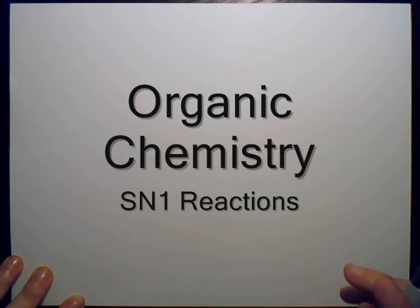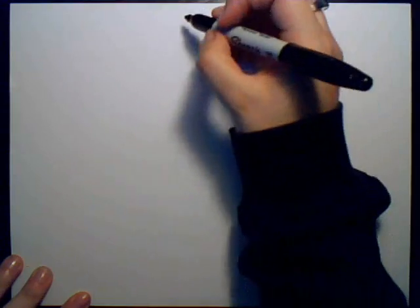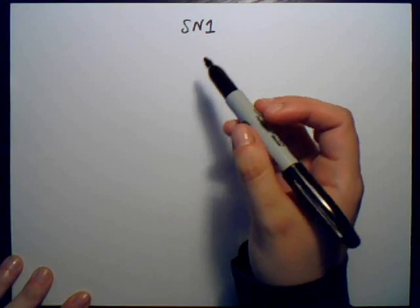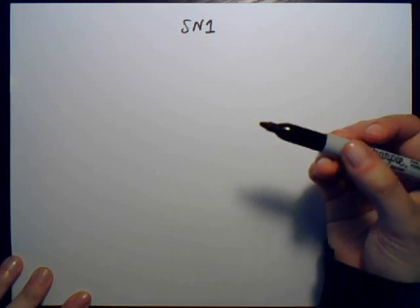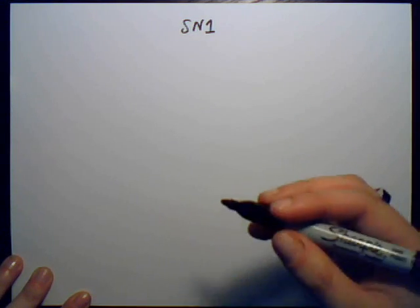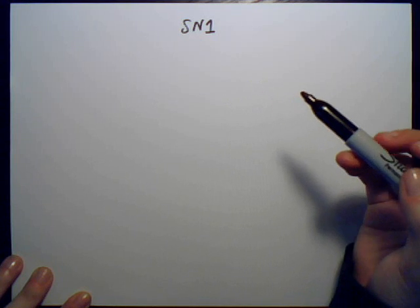Now that we've gone over SN2 reactions, I'm going to cover SN1 reactions. These are a lot more fun to draw than SN2 because it has a few more steps. SN1, of course, stands for nucleophilic substitution. In SN2, both the joining group and the leaving group were responsible for the rate-determining step. In SN1, only one part is going to be responsible for the rate-determining step.